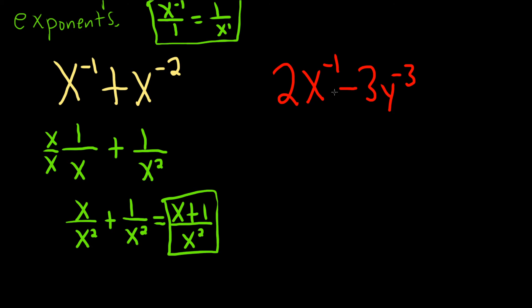We can do the same thing over here. Let's go ahead and make these exponents positive. So we'll bring the x down, so it's 2 over x, minus 3 over y cubed.